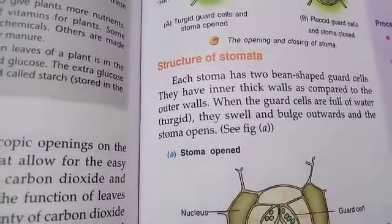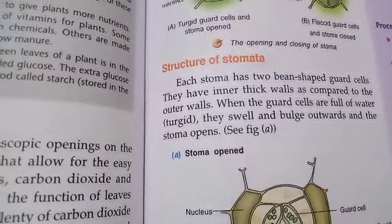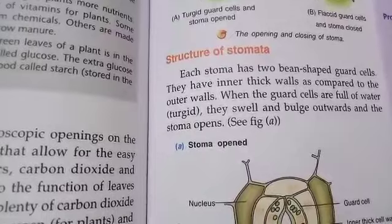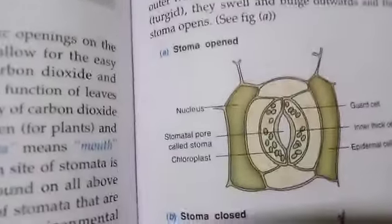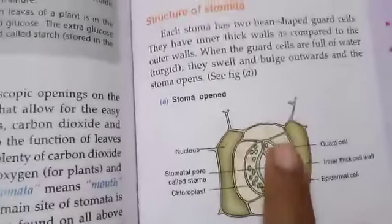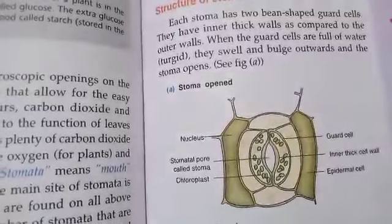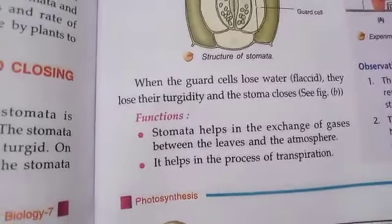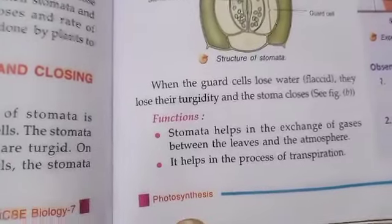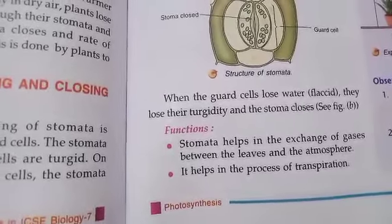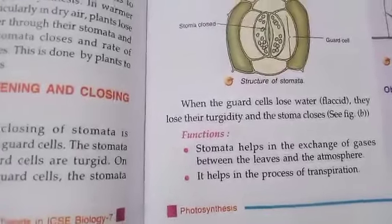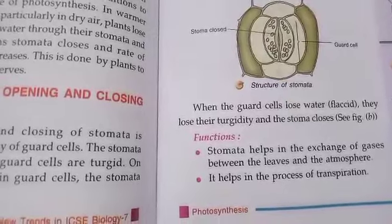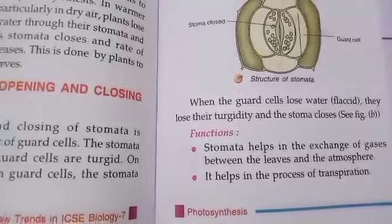A stoma has two bean-shaped guard cells with an inner thick wall compared to the outer wall. When guard cells are full of water they are turgid — they swell and the stomata open. When guard cells lose water they lose turgidity and the stomata close. The functions of stomata include exchange of gases between the leaves and the atmosphere, and helping the process of transpiration.